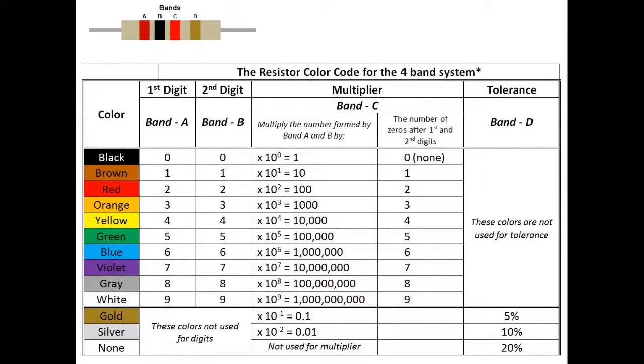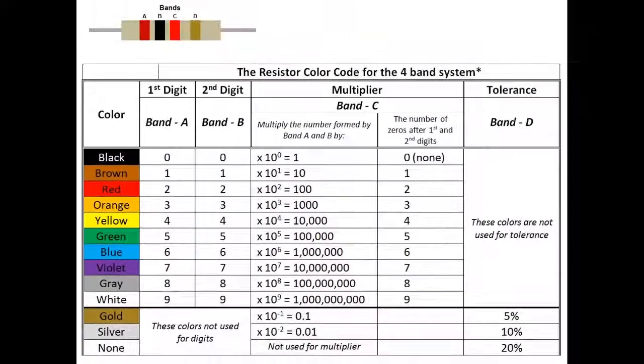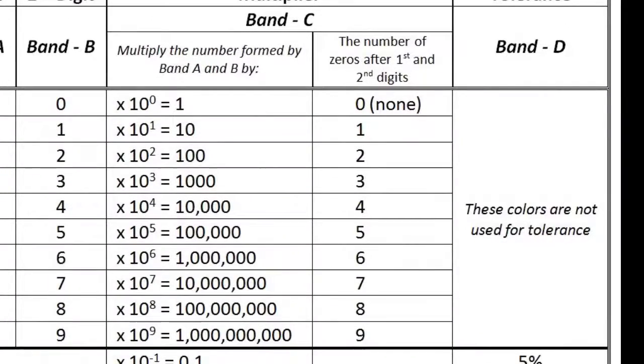The colors start at 0, black being the lowest, and the highest being white. So we have 0 through 9, ten different colors that represent bands A and B, and these numbers literally form the first two digits of the resistance value. We also have that third band, the multiplier, we call that band C, and that just indicates the number of zeros that follow after the first two digits. If you remember that about the color code, it makes it a lot easier to understand.